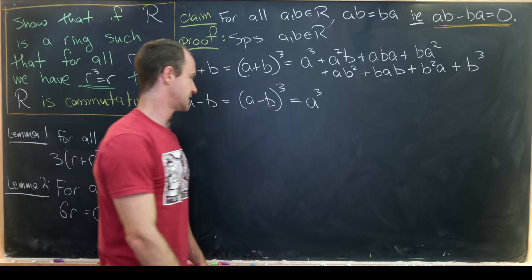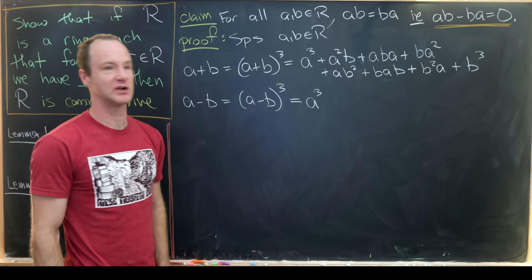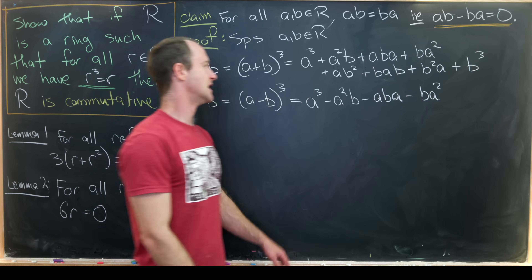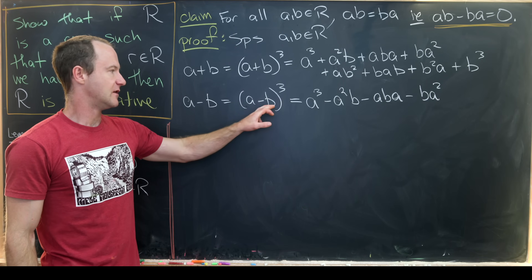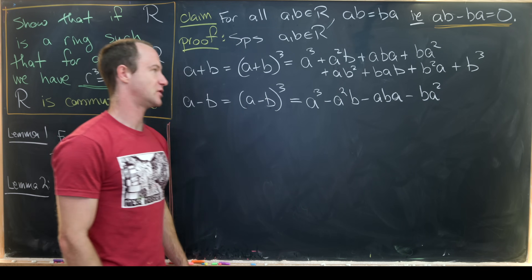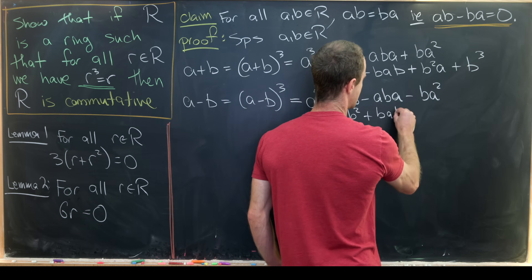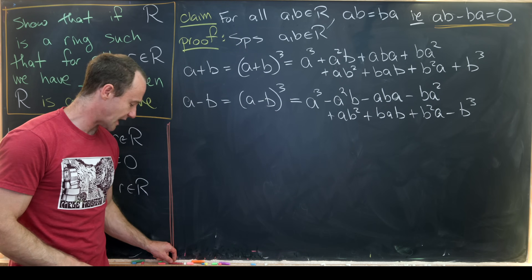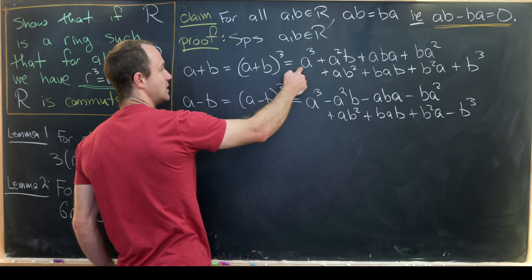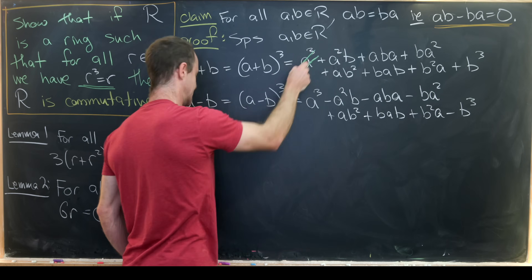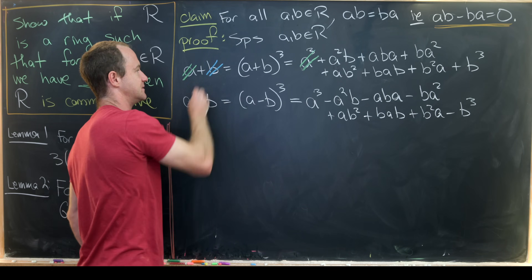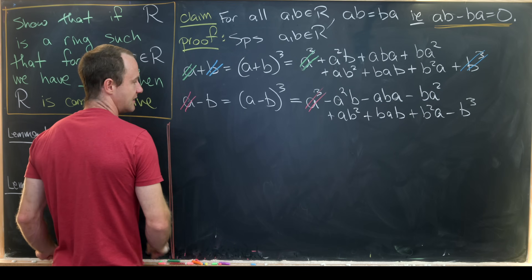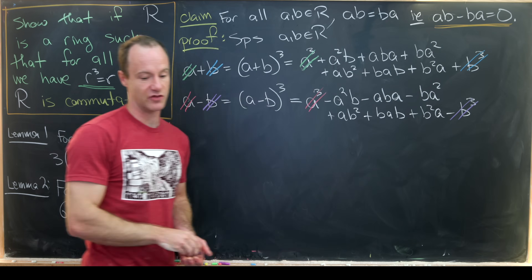Expanding (A − B)³ gives: A³ − A²B − ABA − BA² + AB² + BAB + B²A − B³. Now we cancel: A³ = A so it cancels from both sides; B³ = B so those cancel; similarly A cancels with A³ and negative B cancels with negative B³. We subtract the two expanded equations from each other and look at what remains on each side.